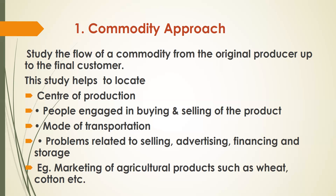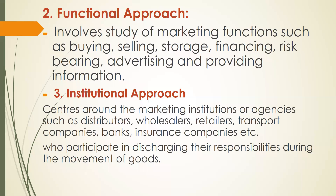For example, agricultural products such as wheat and cotton are commodities that must move from the original producer or farmers to the final or end customers. This is the commodity or goods approach. The next approach is the functional approach.